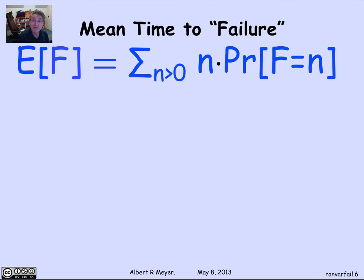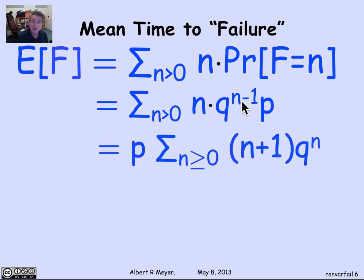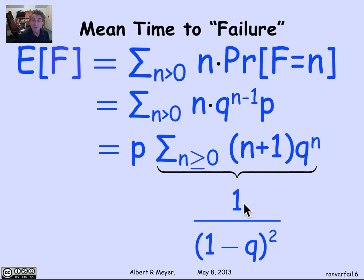The formula for the expectation of F is, by definition, the sum over all possible values N greater than 0 of N times the probability that F equals N. Since the probability that F equals N is Q to the N minus 1 times P, we factor out P to get P times the sum over N greater than 0 of Q to the N minus 1 times N. Replacing N by N minus 1, this becomes P times the sum over N greater than or equal to 0 of (N plus 1) times Q to the N, which is a familiar generating function equal to 1 over (1 minus Q) squared.